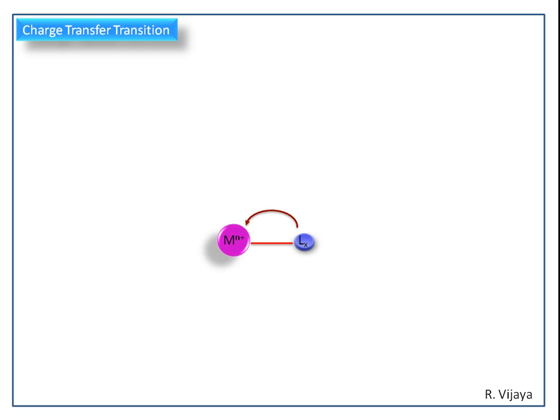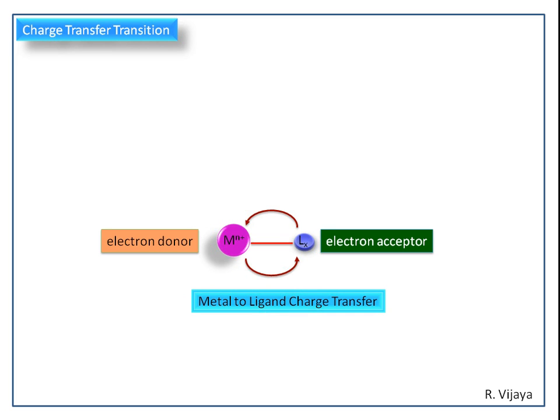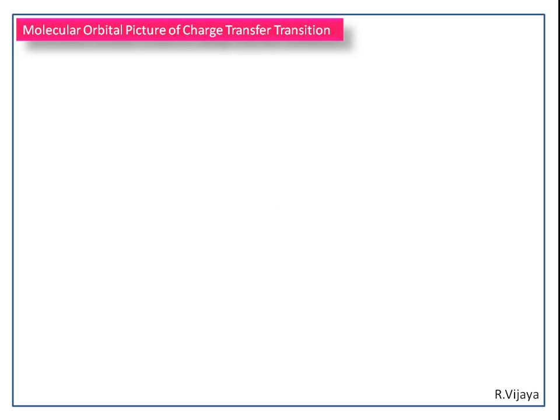Next, we can see the transfer of an electron from the metal to the ligand. This type of transition is known as MLCT, or metal to ligand charge transfer transition. Next, we see the general molecular orbital picture of charge transfer transition.